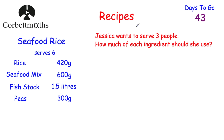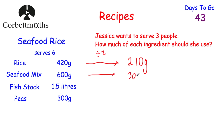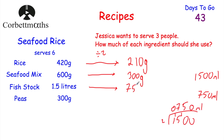If this serves six people and Jessica wants to serve three, we can just halve the ingredients, because three is half of six. Dividing each by two: 420 ÷ 2 = 210g of rice; 600 ÷ 2 = 300g of seafood mix; 1.5 litres = 1500ml, divided by two = 750ml of fish stock; 300 ÷ 2 = 150g of peas. So Jessica would need 210g of rice, 300g of seafood mix, 750ml of fish stock, and 150g of peas.